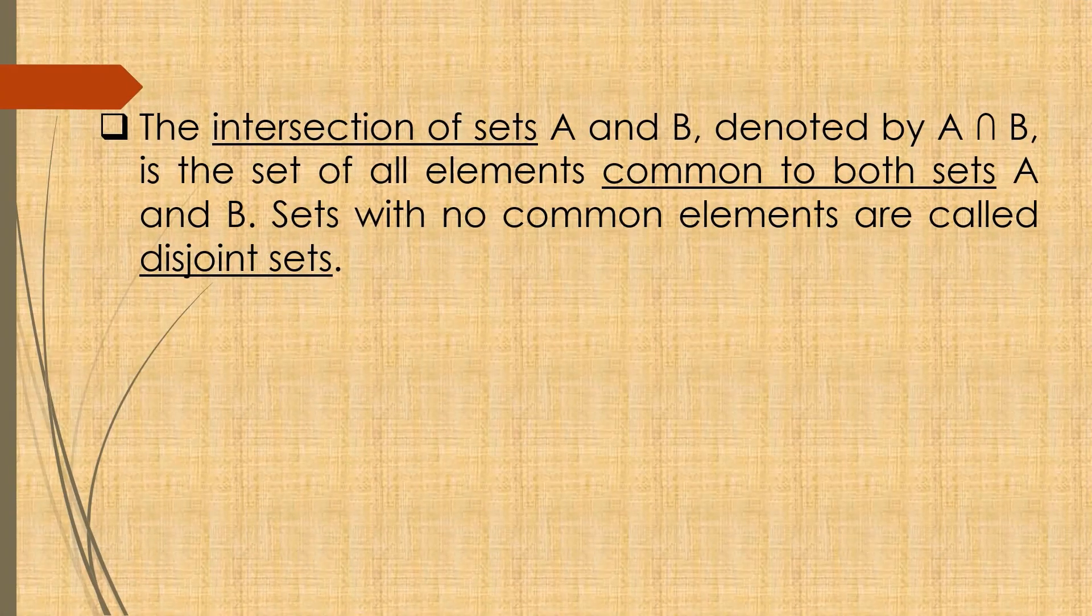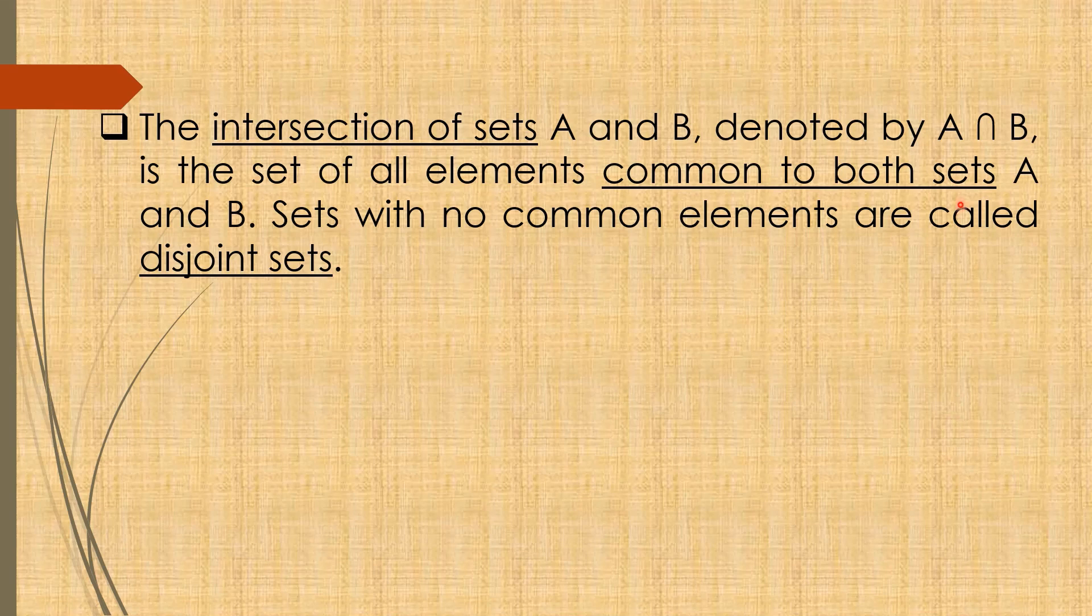Next is the intersection of sets. The intersection of sets A and B denoted by A intersect B. Remember, the symbol for intersection is this inverted U or yung pabalitan na U. Intersection of sets is the set of all elements common to both sets A and B. Sets with no common elements are called disjoint sets.